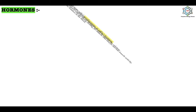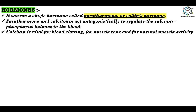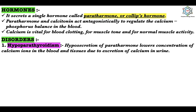The parathyroid gland secretes a single hormone called parathormone (Collip's hormone). Parathormone and calcitonin act antagonistically to regulate the calcium-phosphorus balance in the blood. Calcium is vital for blood clotting, muscle tone, and normal muscle activity. Hypoparathyroidism — hyposecretion of parathormone — lowers the concentration of calcium ions in the blood and tissues due to excretion of calcium in the urine. This increases the excitability of nerves and muscles, causing cramps and convulsions, including sustained contractions of the muscles of the larynx, face, hands, and feet — known as parathyroid tetany.